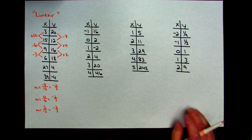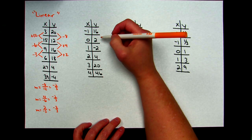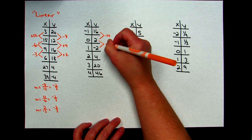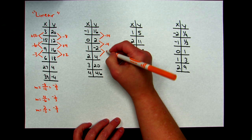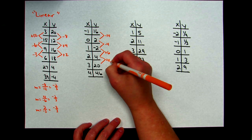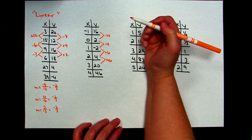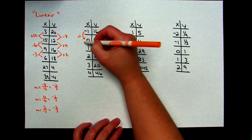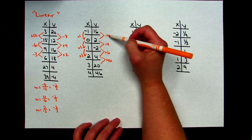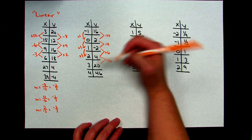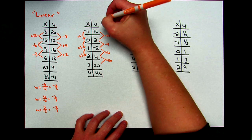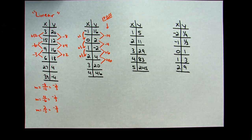Looking at the second example, like always I check my differences first. 2 minus 16 gives a difference of negative 14; negative 2 minus 2 gives negative 4; 4 minus negative 2 gives positive 6; and 20 take away 4 gives plus 16. On the x-side, I'm just adding 1 each time, so I clearly do not have a constant slope — negative 14 over 1, negative 4 over 1 — it's not linear. What I just checked are referred to as the first differences, and we've ruled out linear.